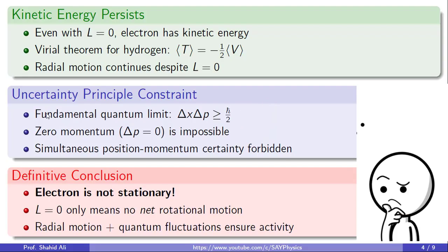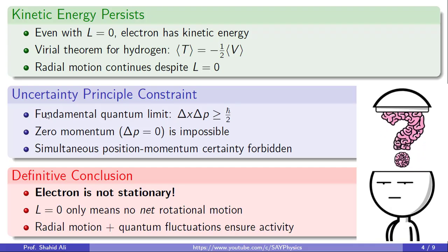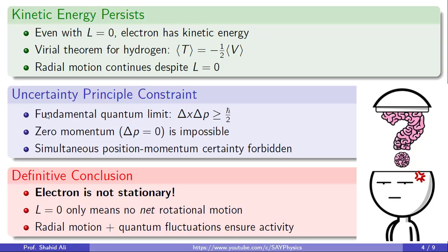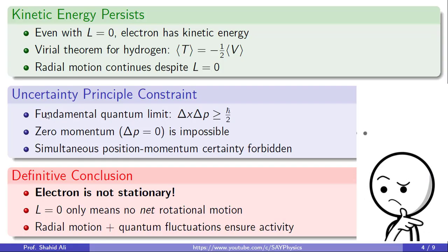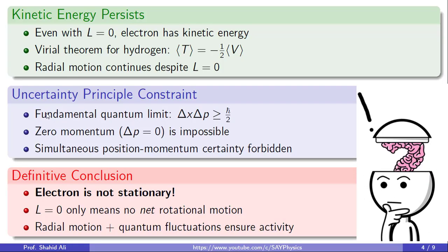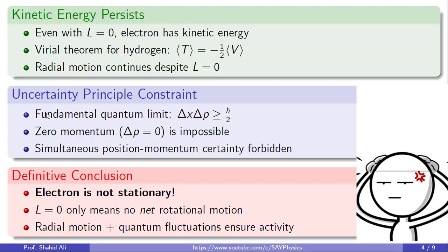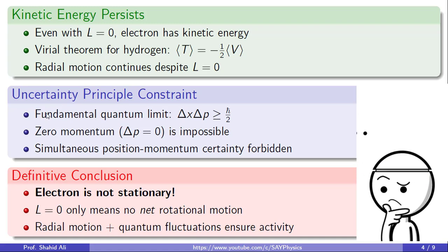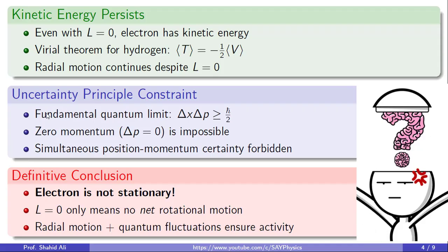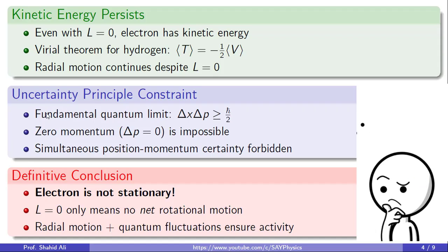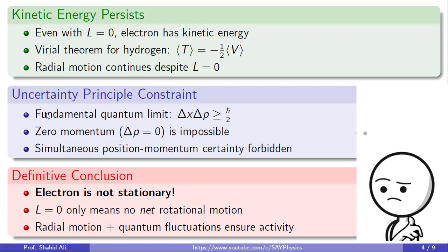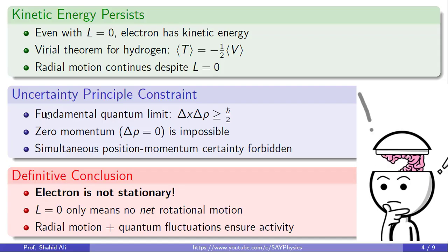Finally, let's be absolutely clear: the electron is not stationary. L equal to zero only means the electron has no net rotational motion, it is not orbiting with angular momentum. But it still has radial kinetic energy and its behavior is governed by quantum fluctuations. So even in the L equal to zero state, the electron is very much active, just not in a classical orbit.